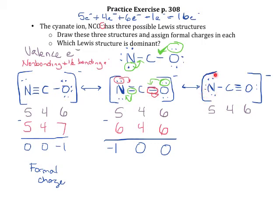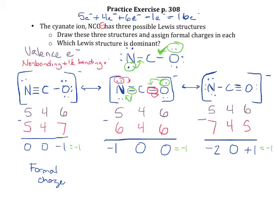For the third structure (N≡C-O)⁻: nitrogen has six non-bonding electrons and six bonding electrons, so half of six plus six gives seven. Carbon again has eight bonding, so it feels like four. Oxygen has six bonding electrons, so half is three, plus two non-bonding gives five. Formal charges: nitrogen is five minus seven = negative two; carbon = zero; oxygen is six minus five = positive one. The sum of all formal charges should equal negative one, matching the overall charge on the ion — a good check.